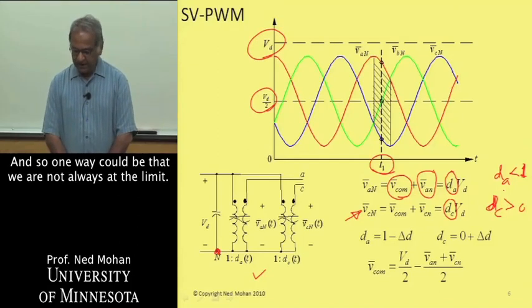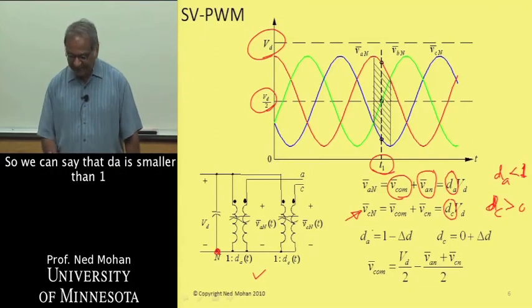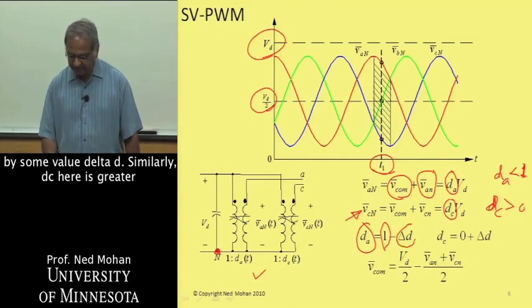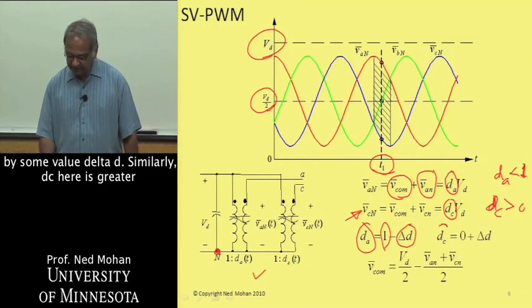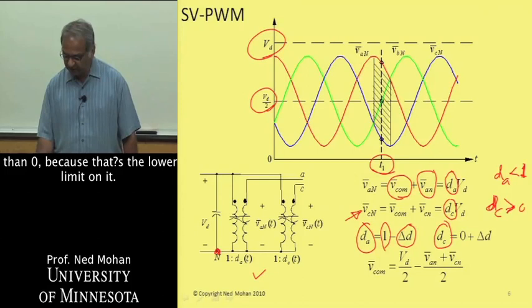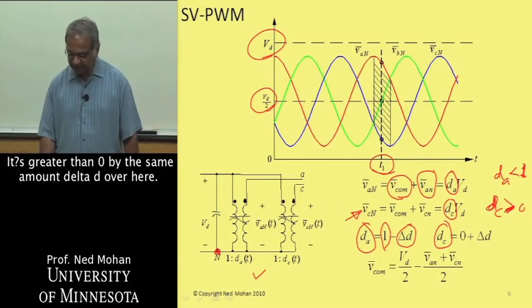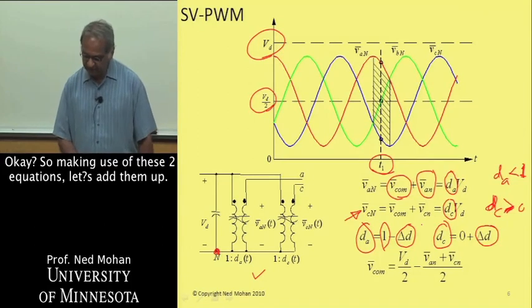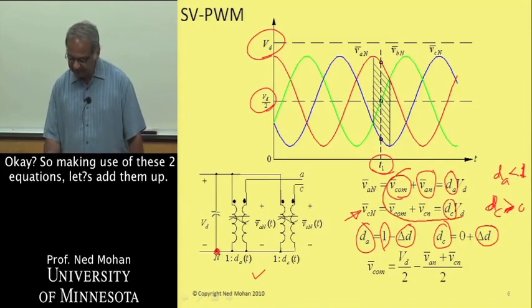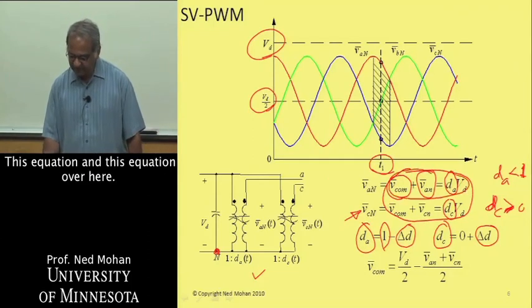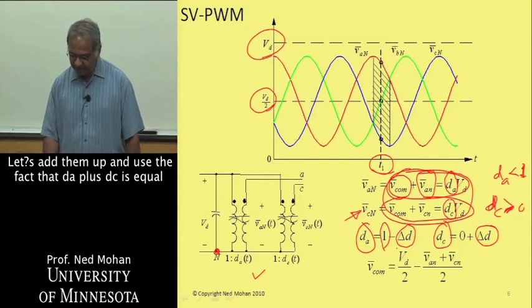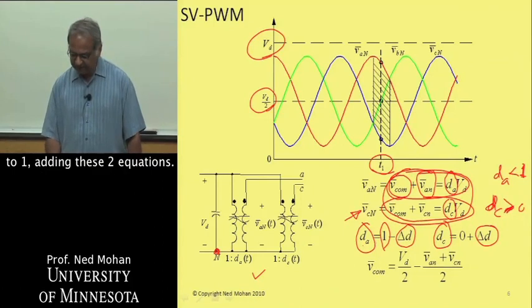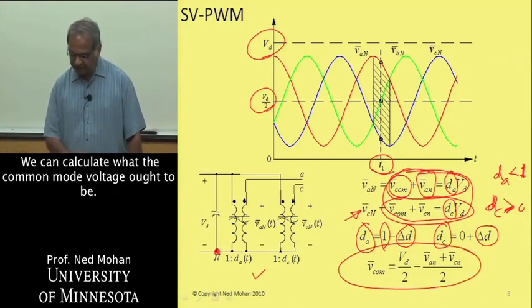One way could be that we are not always at the limit. We can say that DA is smaller than 1 by some value ΔD. Similarly DC is greater than 0, the lower limit on it, by the same amount ΔD. Making use of these two equations, let's add them up, this equation and this equation, and use the fact that DA plus DC is equal to 1. Adding these two equations, we can calculate what the common mode voltage ought to be.